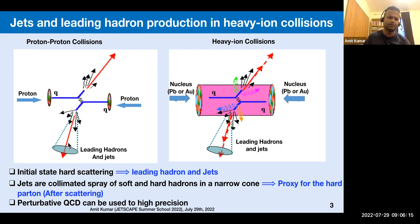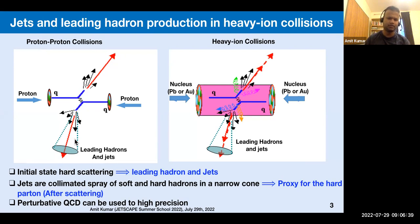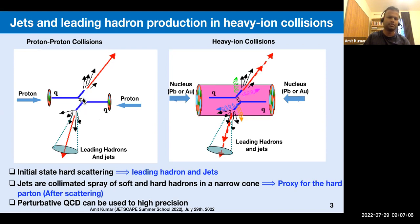These leading hadrons and jets are produced from the initial hard scattering. In the detector what we observe is a collimated spray of soft and hard hadrons in a narrow cone — this is usually referred to as jets. Studying jets is useful because it directly gives us information about the hard parton generated in the hard collision, and perturbative QCD is used to high precision to compute the hard-scattering matrix element.